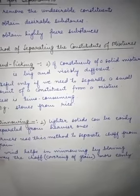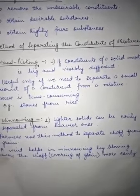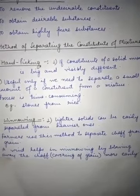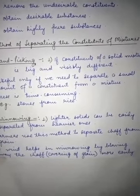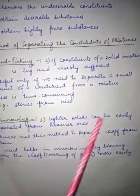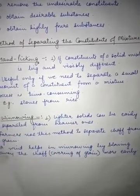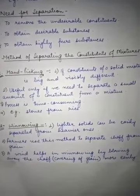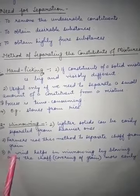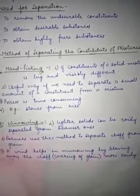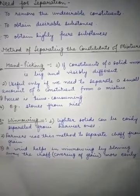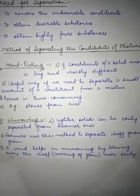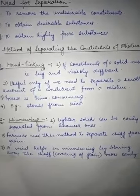The next method is winnowing. In winnowing, lighter solids can be easily separated from heavier ones. Farmers generally use this method to separate chaff from grain. Chaff is the outer covering of a grain — the unwanted part. Wind helps in winnowing by blowing away the lighter chaff particles, leaving behind the heavier grain.